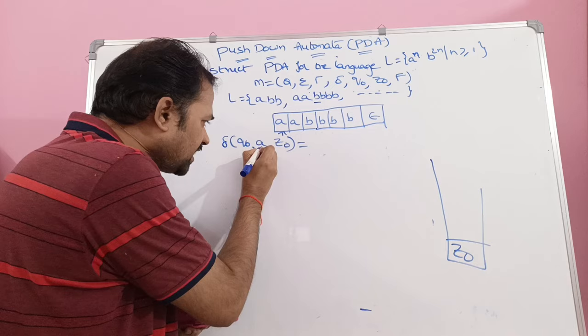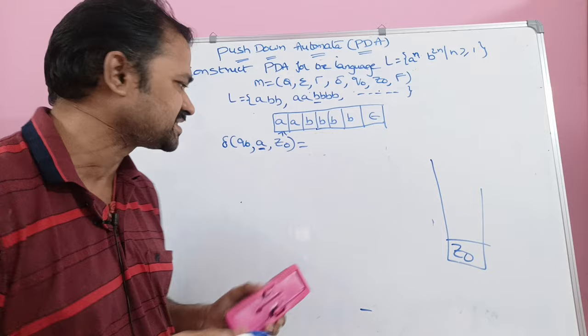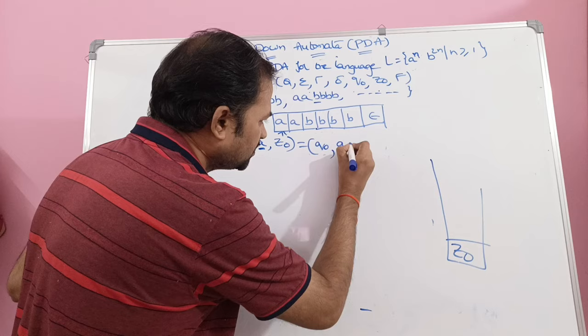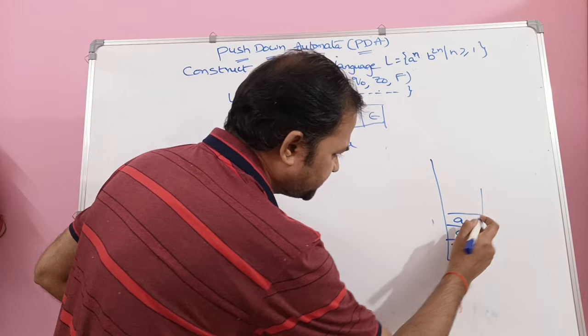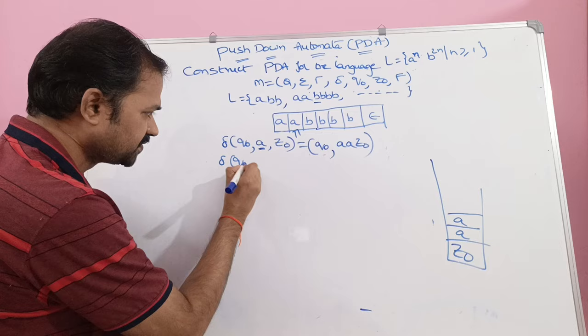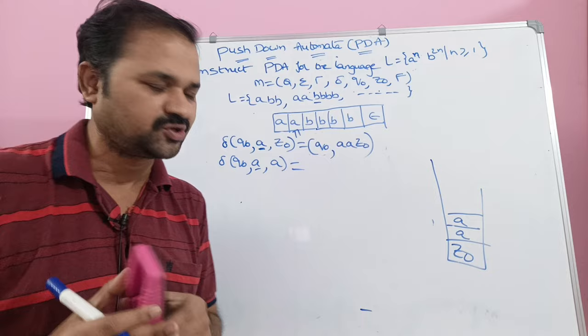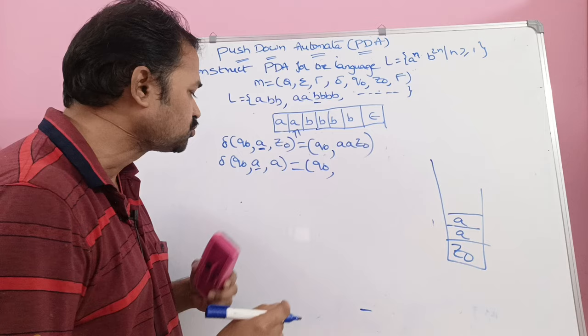If we read 'a', then we have to push 2 a's onto the stack. For the push operation, there is no need to change the state, so the state remains q naught. So δ(q naught, a, z naught) = (q naught, aaz naught) — 2 a's are pushed along with z naught remaining in the stack. Next, we are at the second 'a': δ(q naught, a, a) — input symbol is 'a' and top of the stack is 'a'. We push 2 a's, keeping the state q naught.